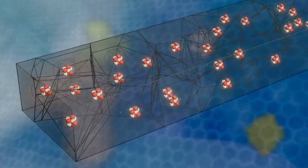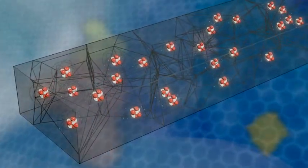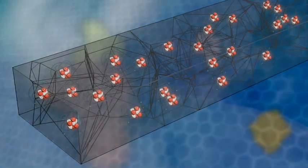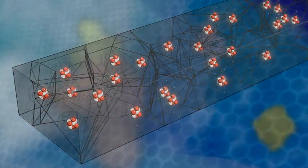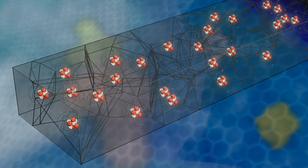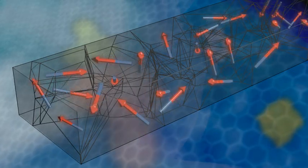In metals like iron, quantum mechanical effects cause the electrons in these domains to share the direction of their magnetic field with other electrons. As a result, each domain has an individual magnetic field.